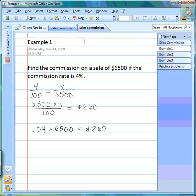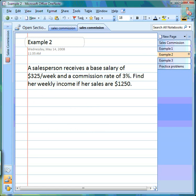The second example takes what we just did a step farther. A salesperson receives a base salary of $325 per week and a commission rate of 3%. Find her weekly income if her sales are $1,250. So first we have to find her commission—that's the exact same thing we just did in Example 1.